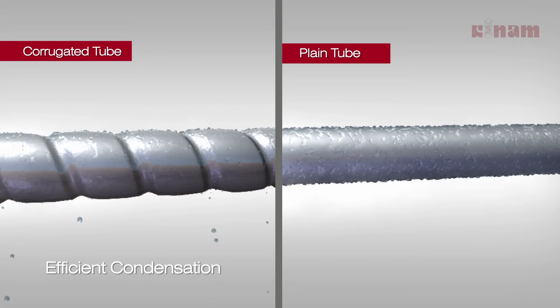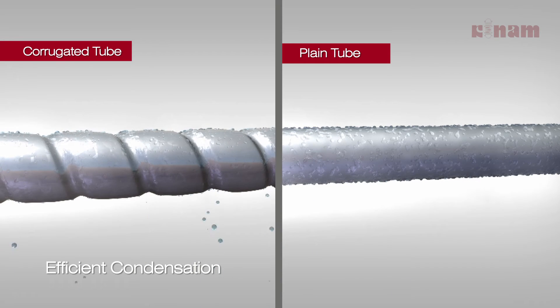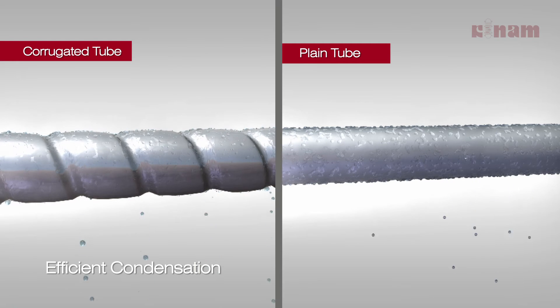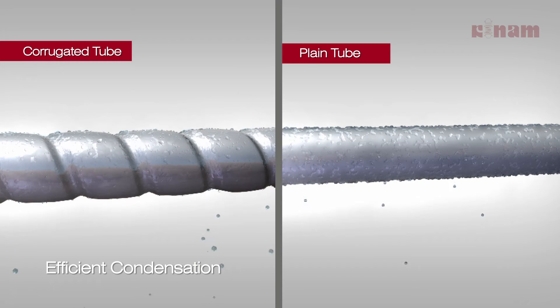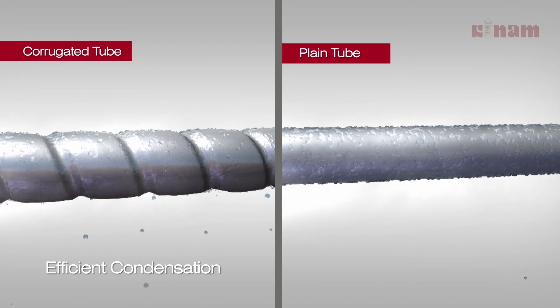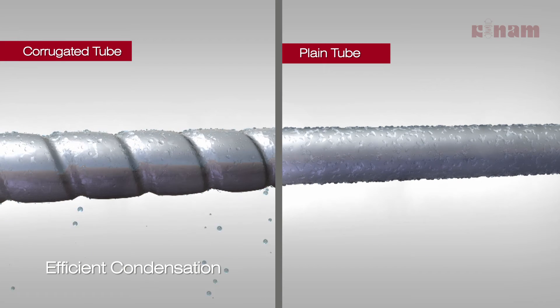The corrugations provide a channel to the condensate layer formed on the surface of the tube, always providing a fresh new surface to the vapors to condense. The condensation is thus drop-wise and not film-wise as in the case of plain tubes. This reduces the heat transfer area by half.